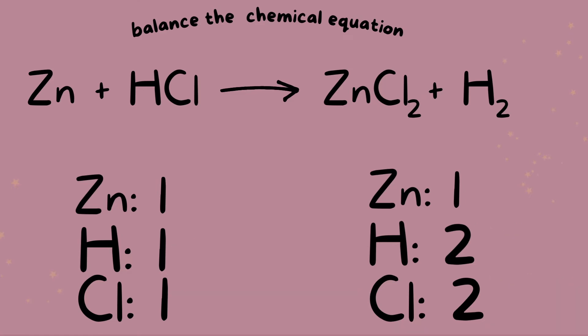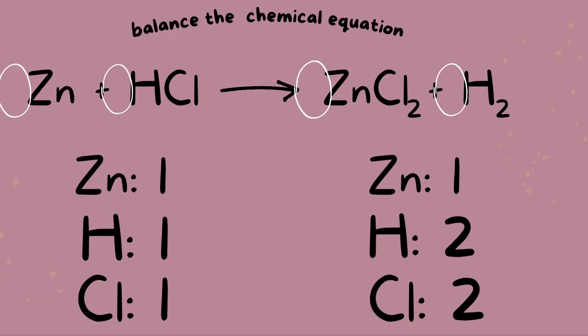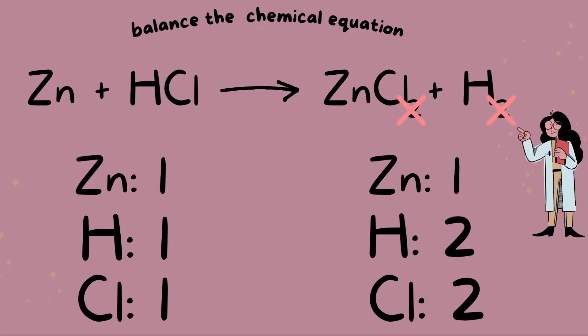Now, I want to point out something very important. The area that I have circled is called the coefficient or basically it's where the coefficient goes. When manipulating numbers on the equation, you may only change these coefficients. The numbers down here, the subscripts, you must never ever change these. If you change these subscripts, then you're going to change the entire compound.